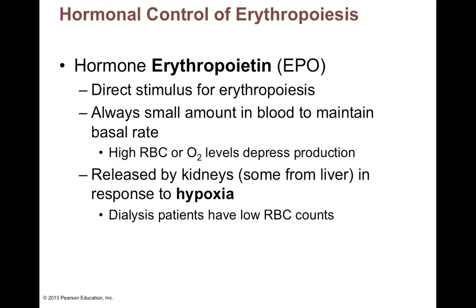EPO is also one of the blood doping drugs that athletes use. If you inject EPO, you get more red blood cells, more hemoglobin, more oxygen transport, and better endurance with less fatigue. But the tradeoff is that your blood becomes more viscous and more resistant to flow. If you're a trained athlete, your heart is already strong enough to handle that extra resistance, but if you're not conditioned for it, it could become more of a problem.